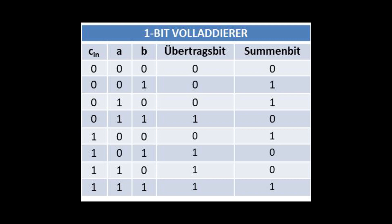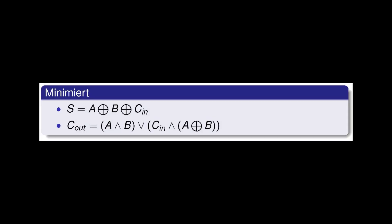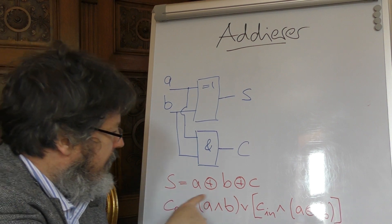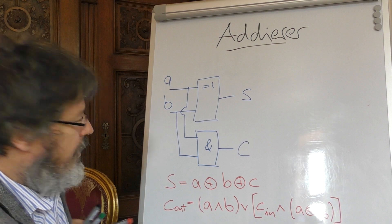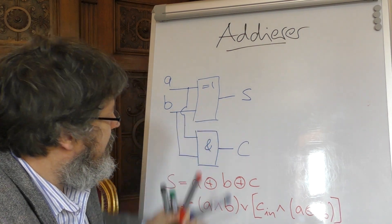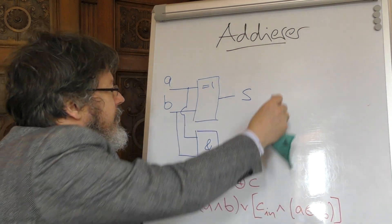Man kann sich das natürlich mithilfe einer DNF und den entsprechenden Überlegungen ableiten, und die minimierte Form letzten Endes sieht dann so aus. Das Summen-Bit ist also die Hintereinanderschaltung zweier XOR-Gatter. Das Carry-Out-Bit ist ein logischer Ausdruck, der heißt A und B oder Carry-In und A XOR B. Ich habe also diese beiden Ausdrücke hier nochmal hingeschrieben und die Frage ist jetzt, wie schaut die Schaltung dazu aus?